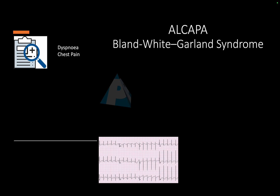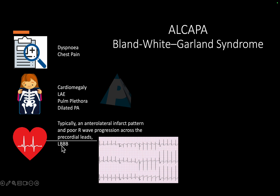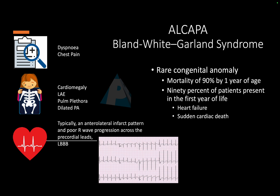Symptoms include chest pain, dyspnea, cardiomegaly — which could be present on a chest X-ray — and signs of left-sided enlargement, pulmonary plethora in case the left-to-right shunt is large, and a dilated pulmonary artery. ECG typically shows anterolateral infarction or an LBBB pattern. This patient's ECG showed left ventricular hypertrophy with ST-T changes, initially considered as LVH with strain pattern.